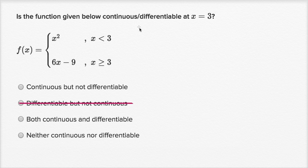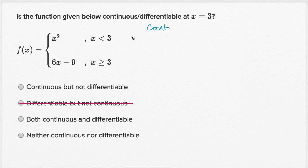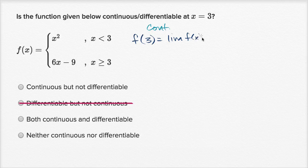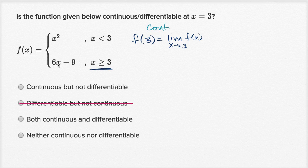Now let's think about continuity first. And frankly, if it isn't continuous, then it's not going to be differentiable. In order to be continuous, f of three needs to be equal to the limit of f of x as x approaches three. What is f of three? We fall into the case where x equals three, so six times three is 18 minus nine, which is nine.